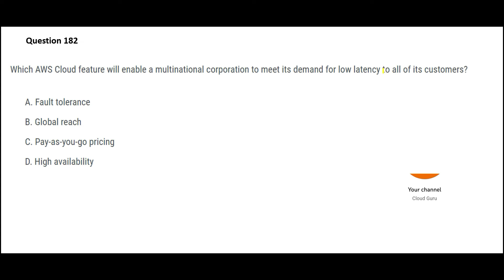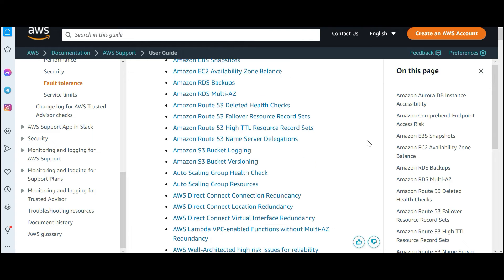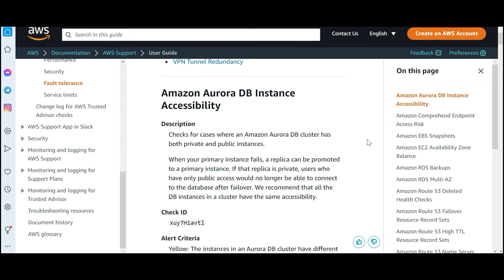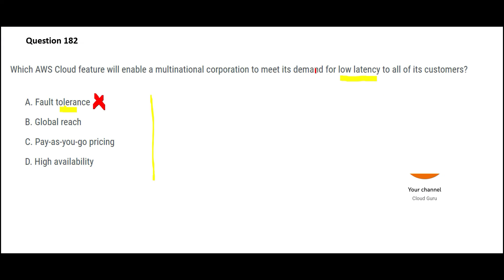In this next question we have to identify what will help you with low latency. Low latency means high performance — if you have a website with low latency, the moment you type amazon.com you get an instant response. Fault tolerance means your application is deployed on two AZs, so if one AZ fails your application still runs, but this does not help with high performance or low latency.